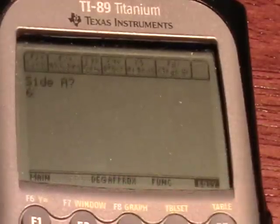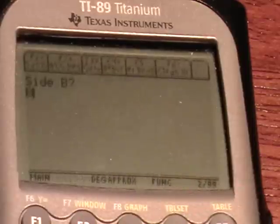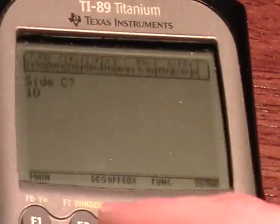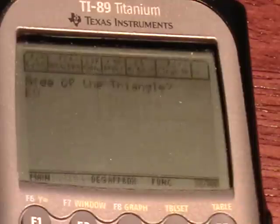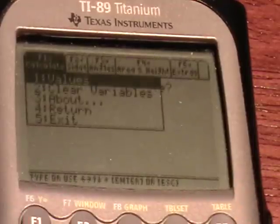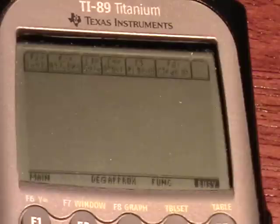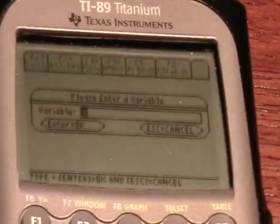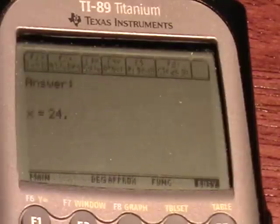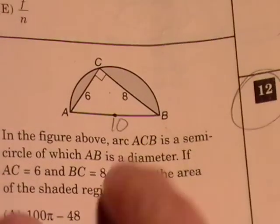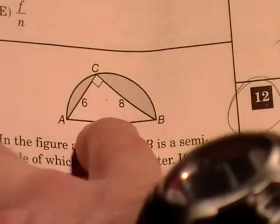6 for side A, 8 for side B, 10 for side C. We'll let area equal X and then solve for X. Choose degree mode, and it'll calculate an answer of 24. 24 is the area of the triangle inscribed in the semicircle.